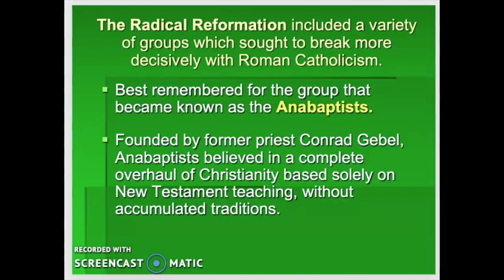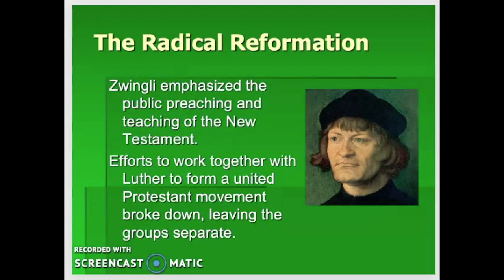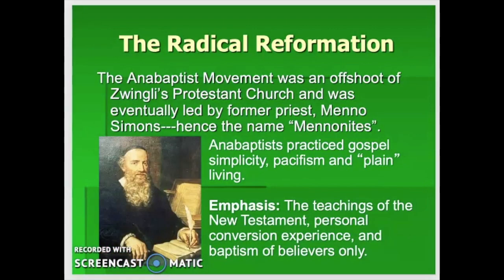The Anabaptists had their origins in Swiss Protestantism begun by the priest Ulrich Zwingli, who had been a student of Erasmus. By 1520, Zwingli had broken with the Roman Catholic Church and was a major factor in converting Zurich and other Swiss cities to Protestantism during the 1520s, simultaneous with Lutheranism. The Anabaptist movement was an offshoot of Zwingli's church and was eventually led by former priest Menno Simons, whose followers were known as Mennonites. Mennonites emphasized gospel simplicity, pacifism, and plain living.